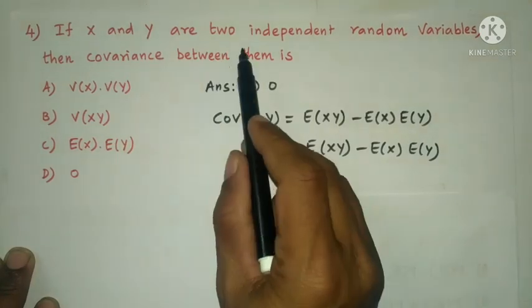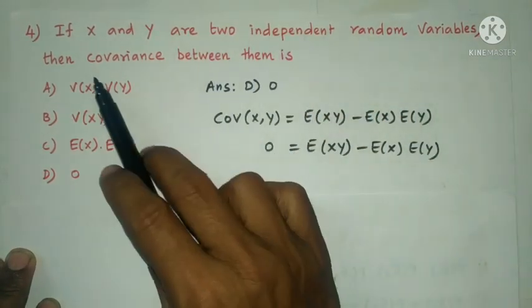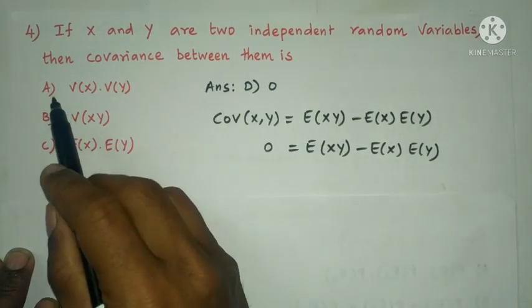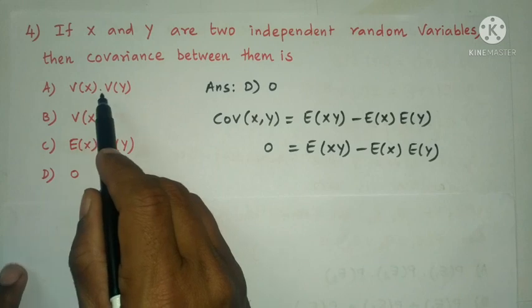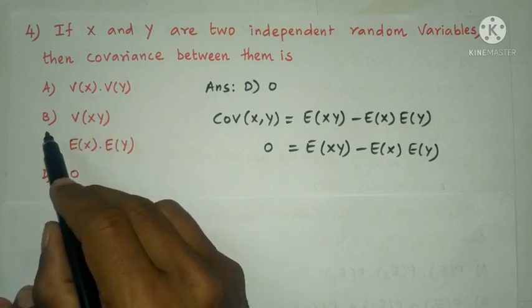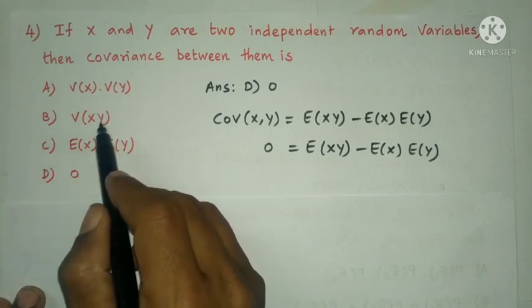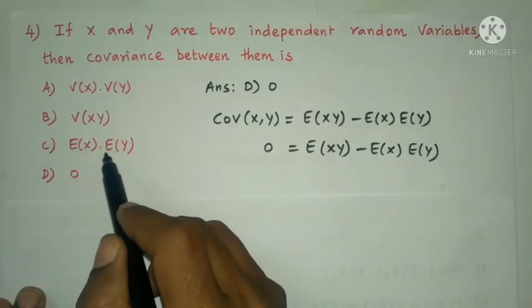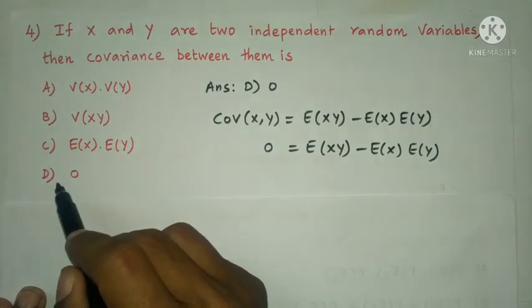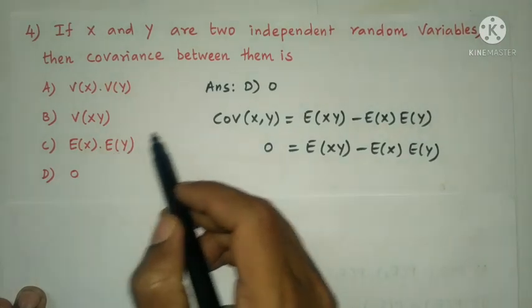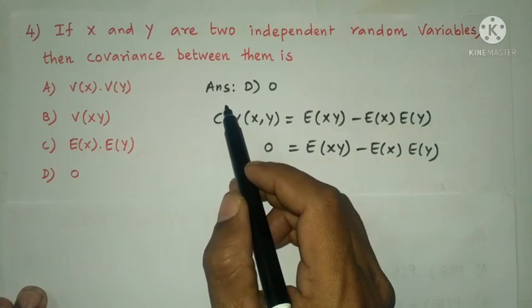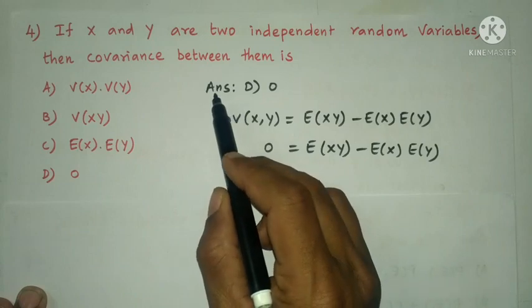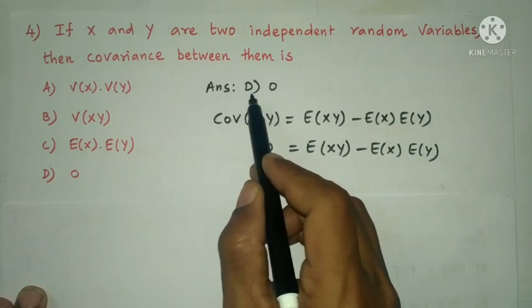Next question: if X and Y are two independent random variables, then the covariance between them is — option A: variance of X into variance of Y; option B: variance of X, Y; option C: E(X) into E(Y); option D: 0. If X and Y are independent random variables, covariance of X and Y equals 0. So the answer is option D, 0.